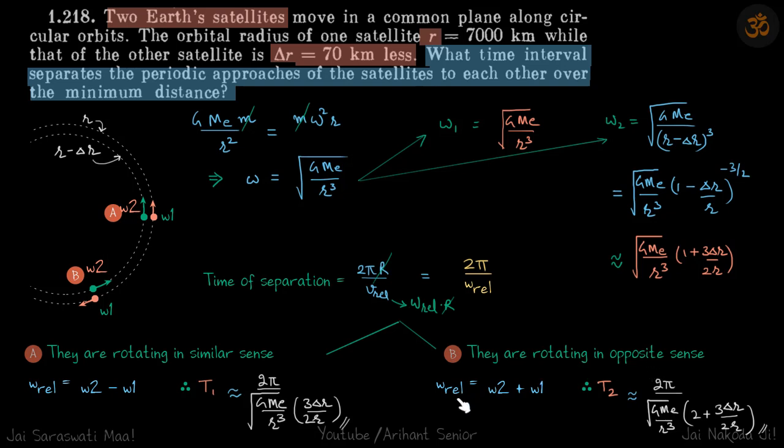You will get this. And when they're rotating in opposite sense, then omega relative is omega 2 plus omega 1, so they're going to meet each other very fast, so this will be omega 2 plus omega 1, which will give this.